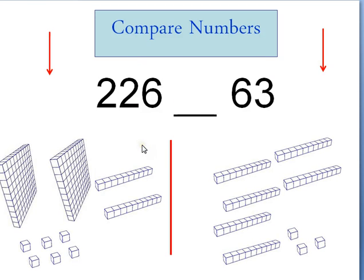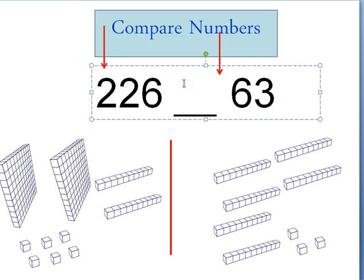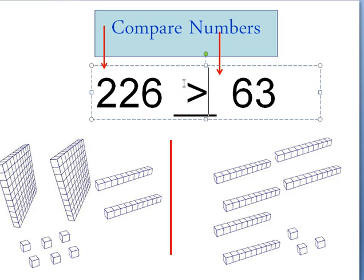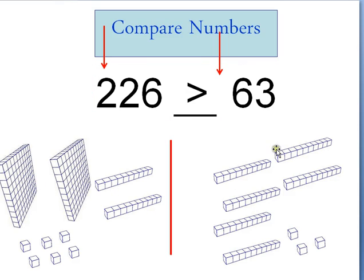Sometimes numbers don't have the same number of digits. This one has a digit in the hundreds place and a number in the tens place, while this one only has ones and tens. Since this one has hundreds and this one doesn't, the number with hundreds is automatically bigger — because these two hundreds are more than anything over here; this number doesn't even have enough to add up to one of those hundreds. So if one number has more digits — three digits: ones, tens, and hundreds — versus only two digits, that number is going to be larger.